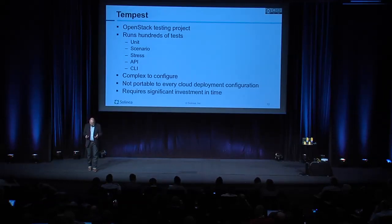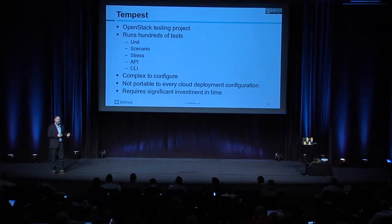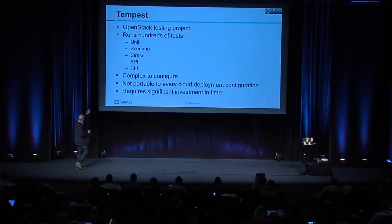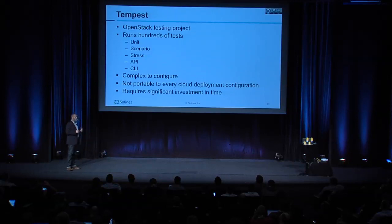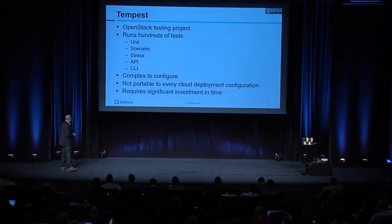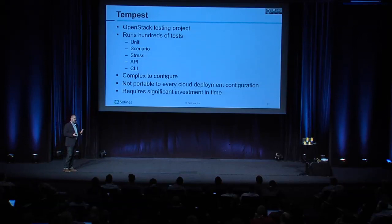Tempest is an old OpenStack project — it's been around since almost the start. It runs hundreds of different tests; if you've ever run it, you kick off Tempest, go get a coffee, maybe take a little nap, get another cup of coffee, come back and Tempest is still probably running. It runs every unit test for every program. It does some scenarios — probably not the scenarios we need, but some. It does stress testing, repeatedly beating on a particular code path like authentication or token creation out of Keystone. It determines API correctness to make sure responses come back in the correct format. And it tests all of the CLI.